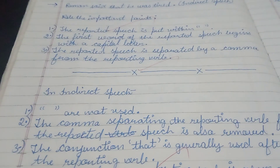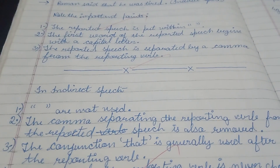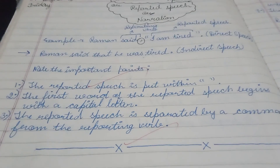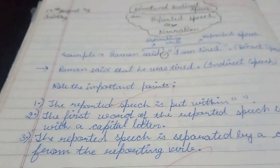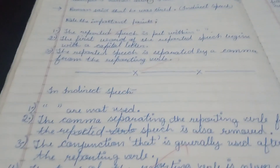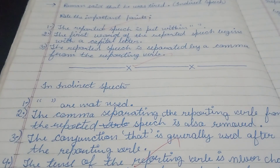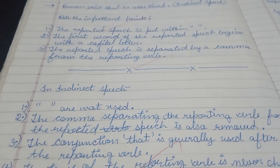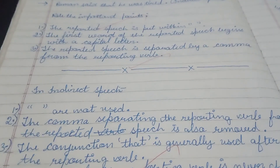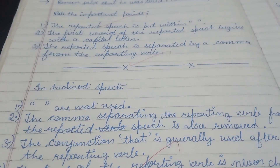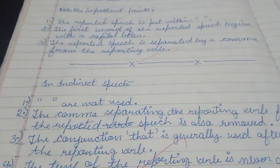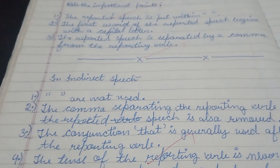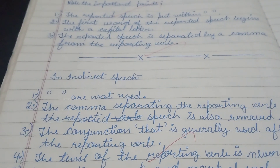The conjunction 'that' is generally used after the reporting verb — 'said that.' I write 'generally' because it is not in 100% of cases that we will use the conjunction 'that.' We will be studying more about this further.